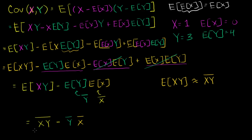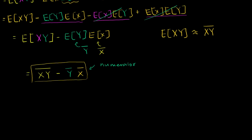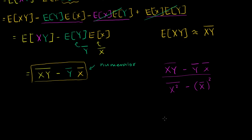This should start looking familiar. This is the mean of the products of x and y from your sample minus the mean of y times the mean of x — and this right here is the numerator when we were trying to figure out the slope of the regression line. To remind you: it was literally the mean of the products of each data point's x and y, minus the mean of y times the mean of x, all over the mean of x-squared minus the mean of x squared.